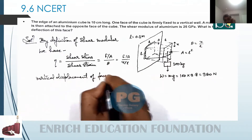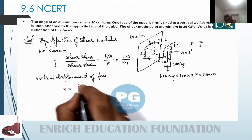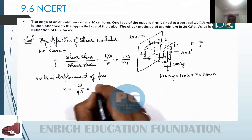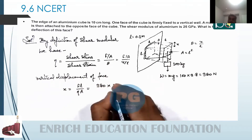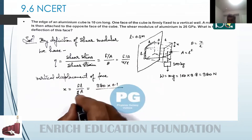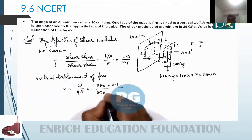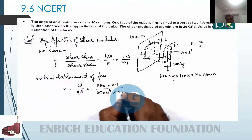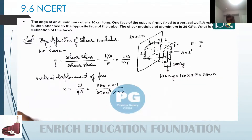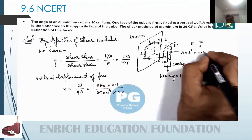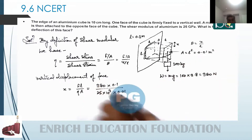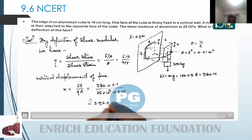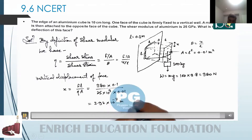The vertical displacement x = F L / (eta × A). Substituting: force = 980 N, L = 0.1 m, shear modulus eta = 25×10⁹ Pa, and area = 0.01 m². Numerically solving gives x = 3.92×10⁻⁷ m. That is the vertical deflection of the face.